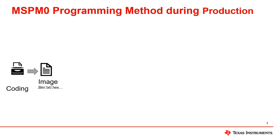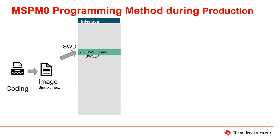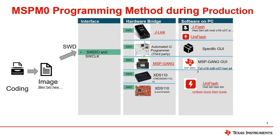One way to program is to use ARM serial wire debug, or SWD. SWD uses interface communication lines called SWDIO and SWClock. To program with SWD you need a hardware bridge and the corresponding software.